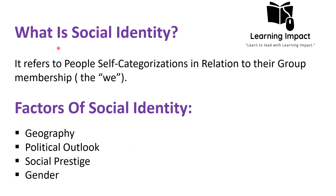Now, what is social identity? Since today's lecture covers types of social group on the basis of identification, we must first define social identity. Social identity refers to people's self-categorization in relation to their group membership — individuals self-categorize themselves according to the groups they identify with. This social identity may be based on various factors, for example geography: the region where I was born gives me a social identity, such as being from Pakistan.